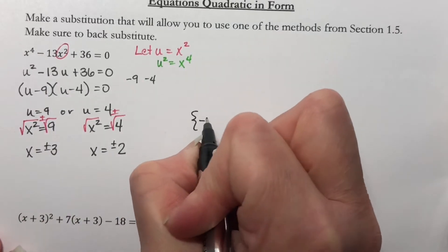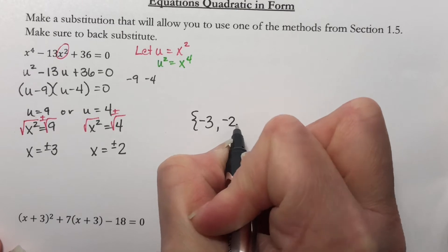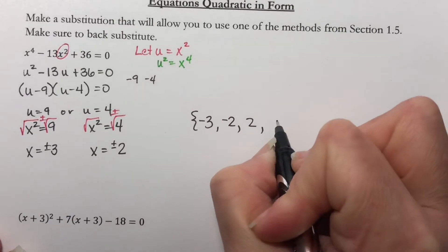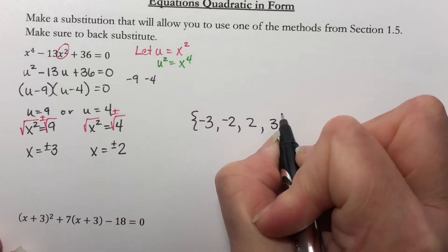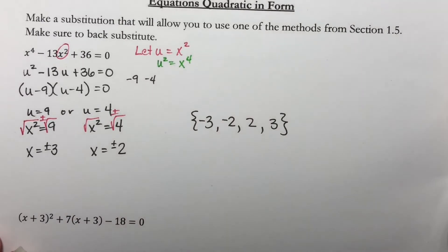I get four solutions, which is what I expected: negative 3, negative 2, positive 2, and positive 3. Those are all of the solutions.